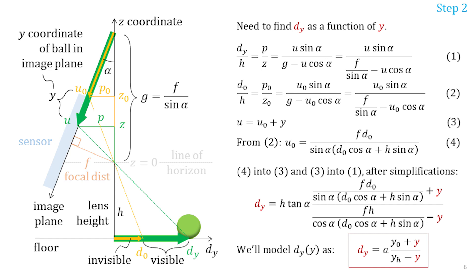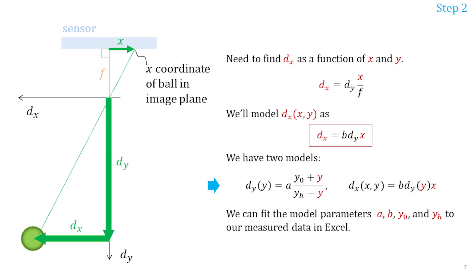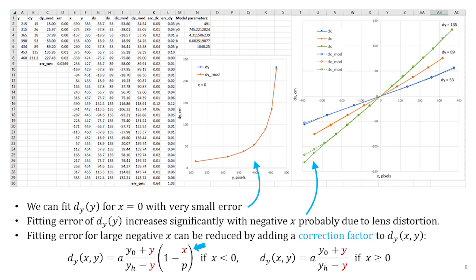The models for the dx and dy coordinates of the ball on the floor use four parameters that I estimated from experiments. In these experiments I placed the ball in various positions relative to the car, measured the ball dx and dy coordinates on the floor and x and y coordinates in the image. Then I fitted the derived models using the Excel solver. The results are shown here.